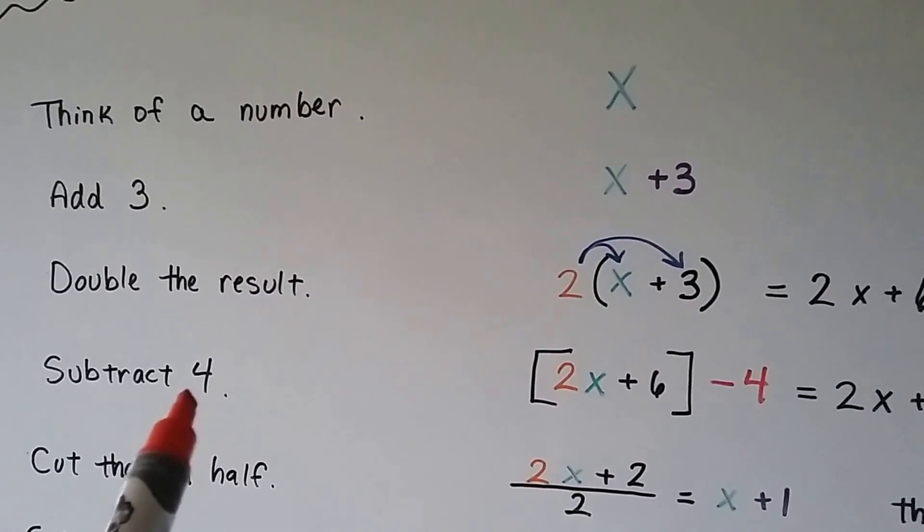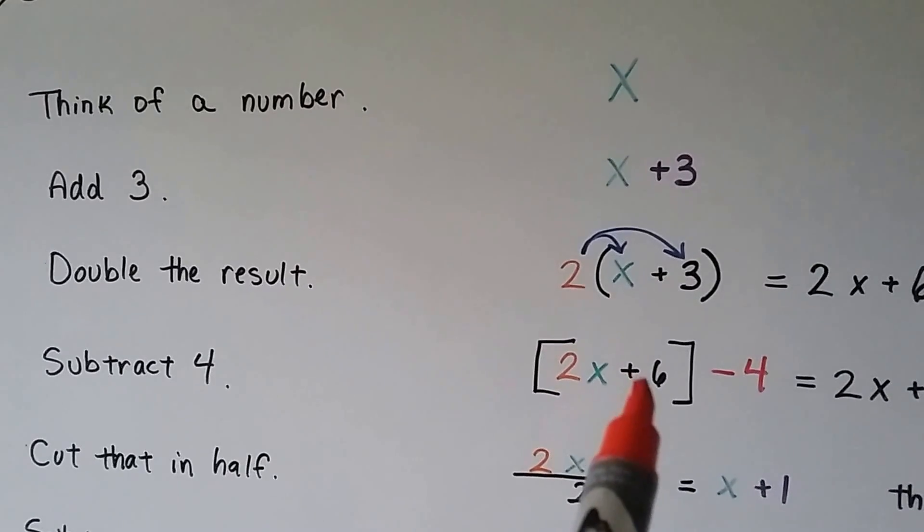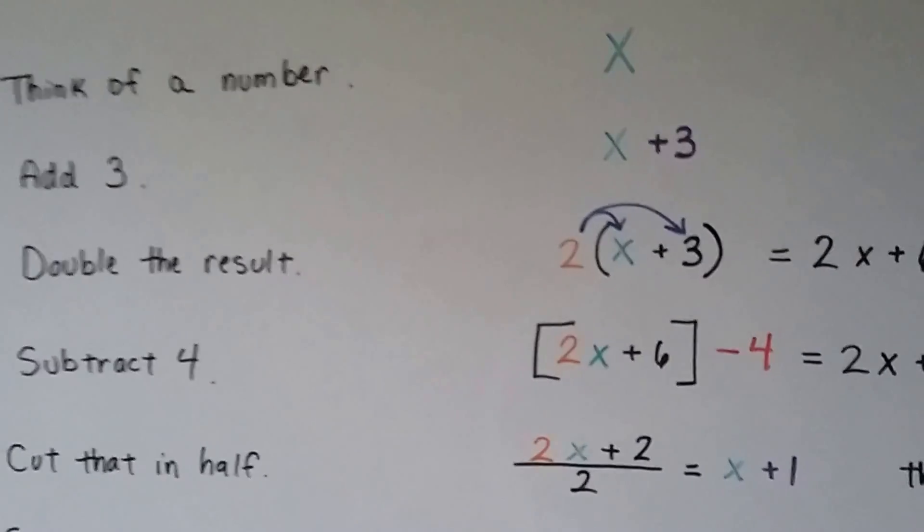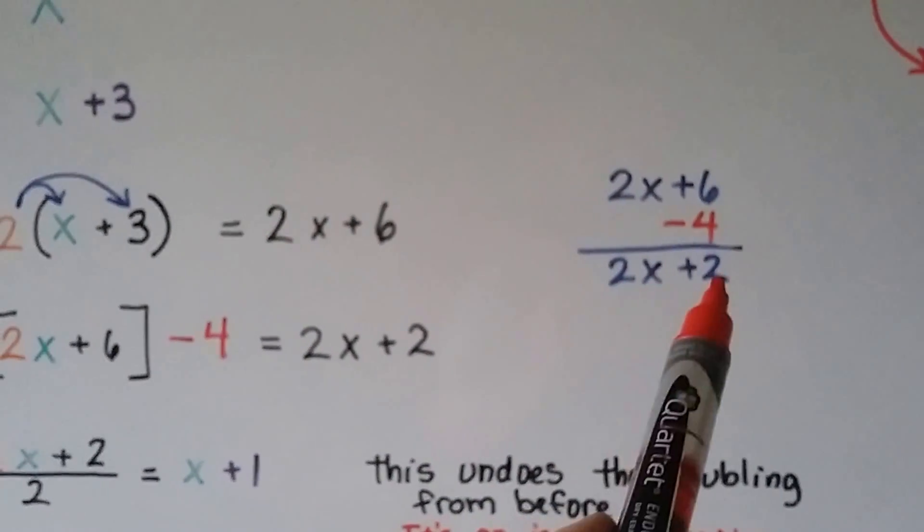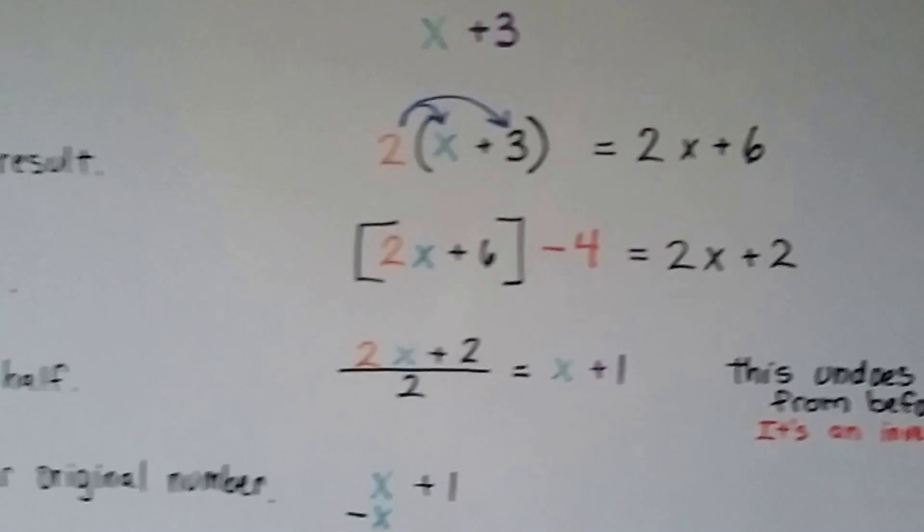Now it says to subtract four. Well, we subtract four from the six because they're like terms. 2x plus 6 minus 4 is 2x plus 2. So now we've got 2x plus 2.